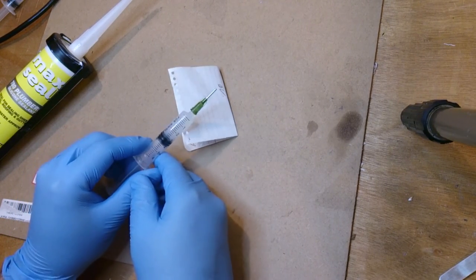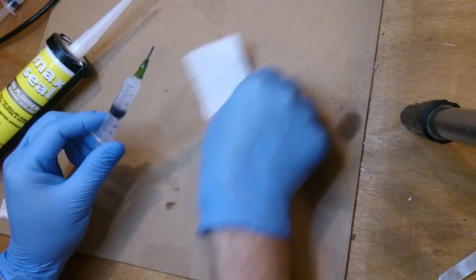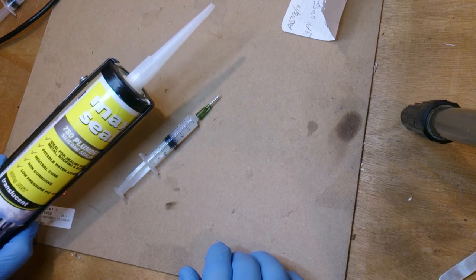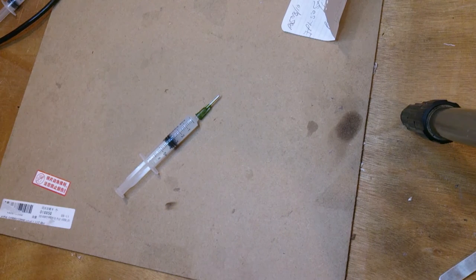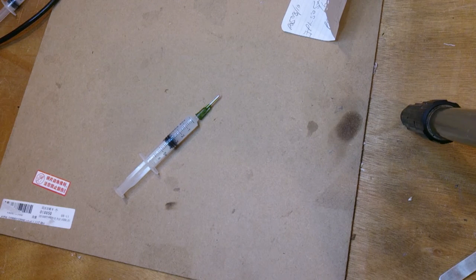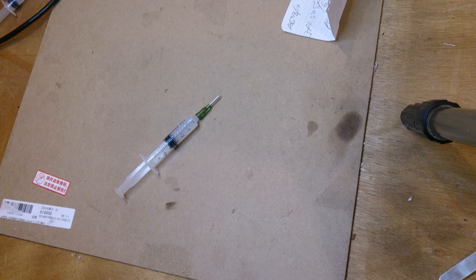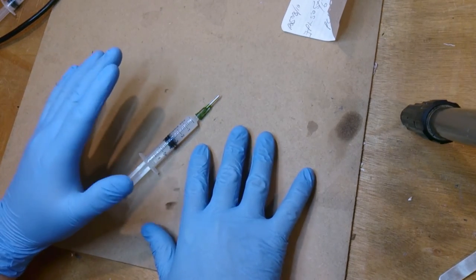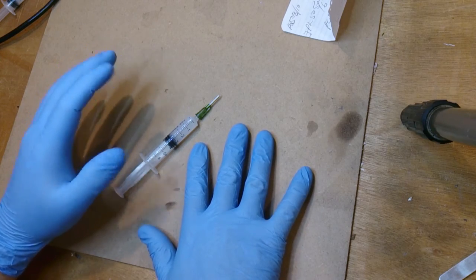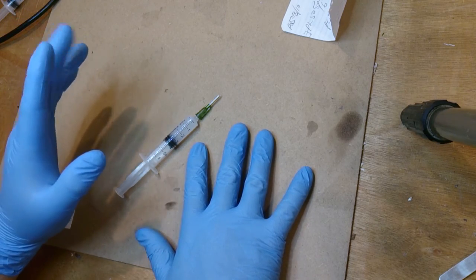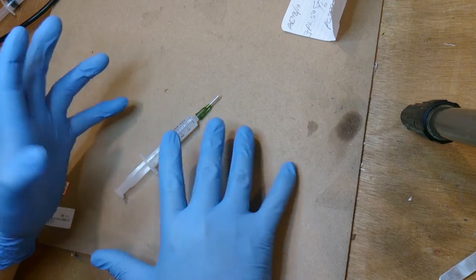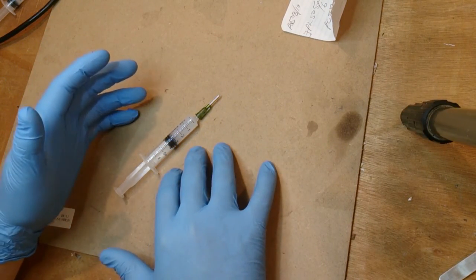And this is certainly a much easier way of dispensing silicon when you need it. Than trying to deal with one of these things. Or spending a bunch of money on little individual use tubes. I'm actually going to probably go buy myself a tube of 744. I think it's DuPont. I'm not sure. And fill up tubes like this.